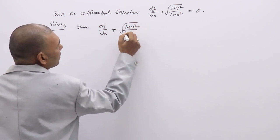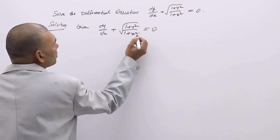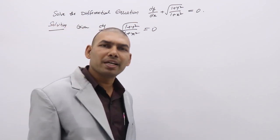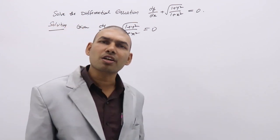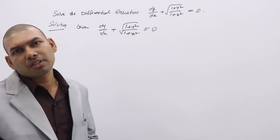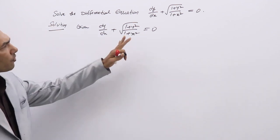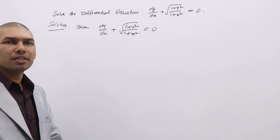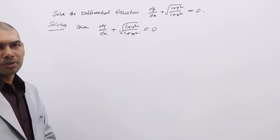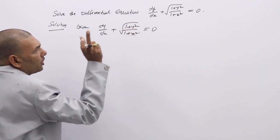This is the given DE, in which we have only dy/dx. If we have only dy/dx, that is a first order first degree DE, which may be in many forms. But if you can separate y terms and x terms, that comes under variable separable. Here, y terms are individual and x terms are individual.